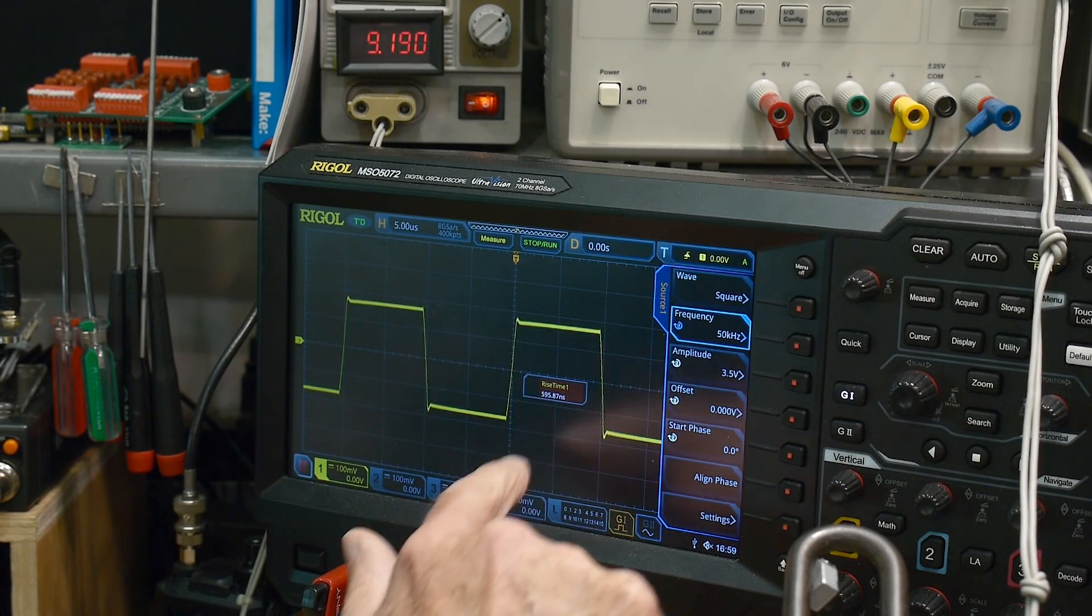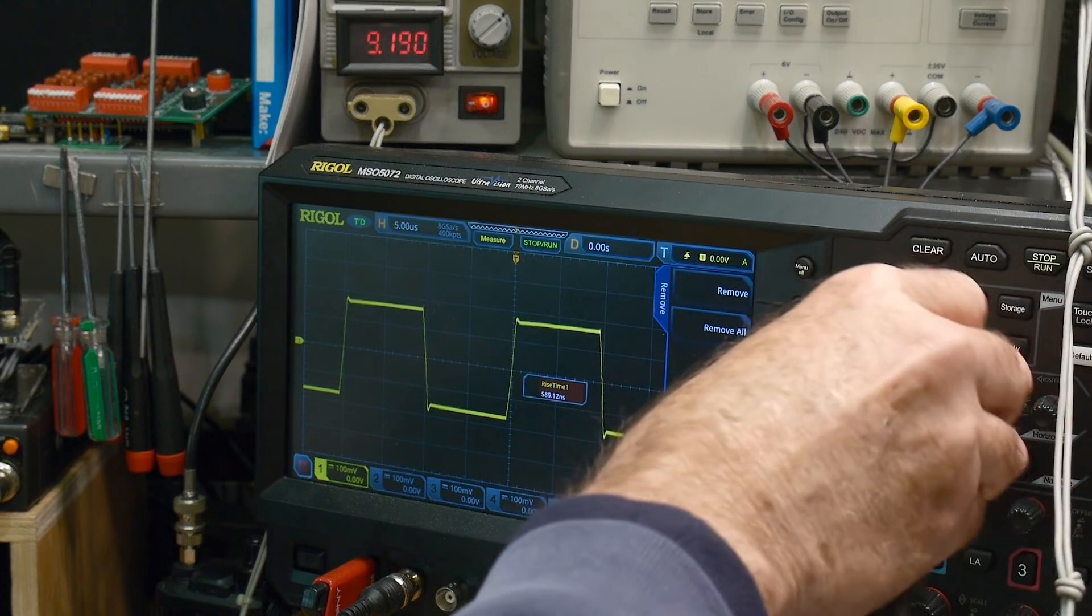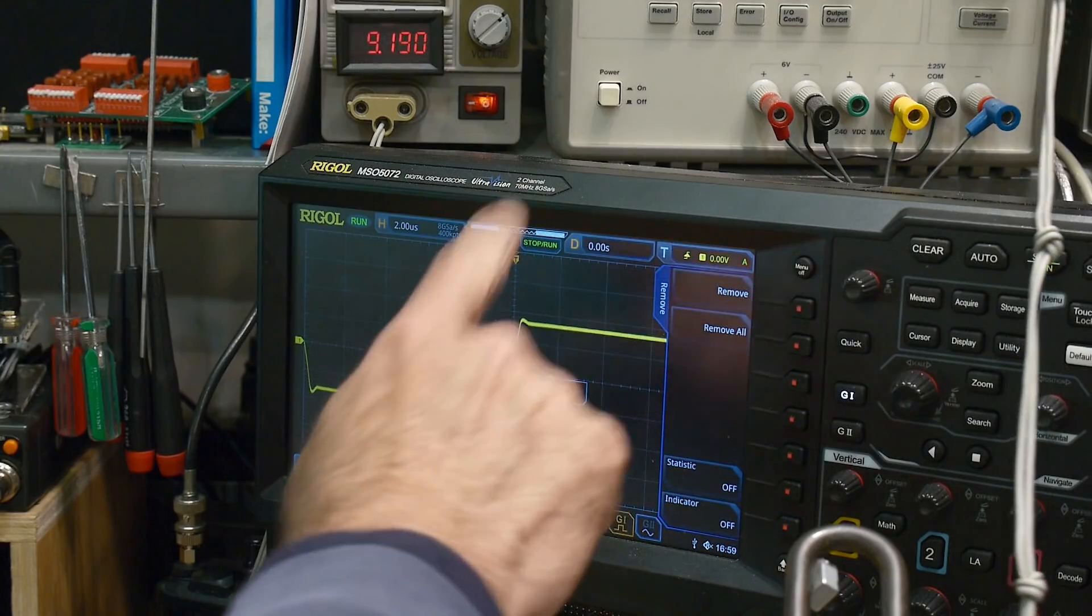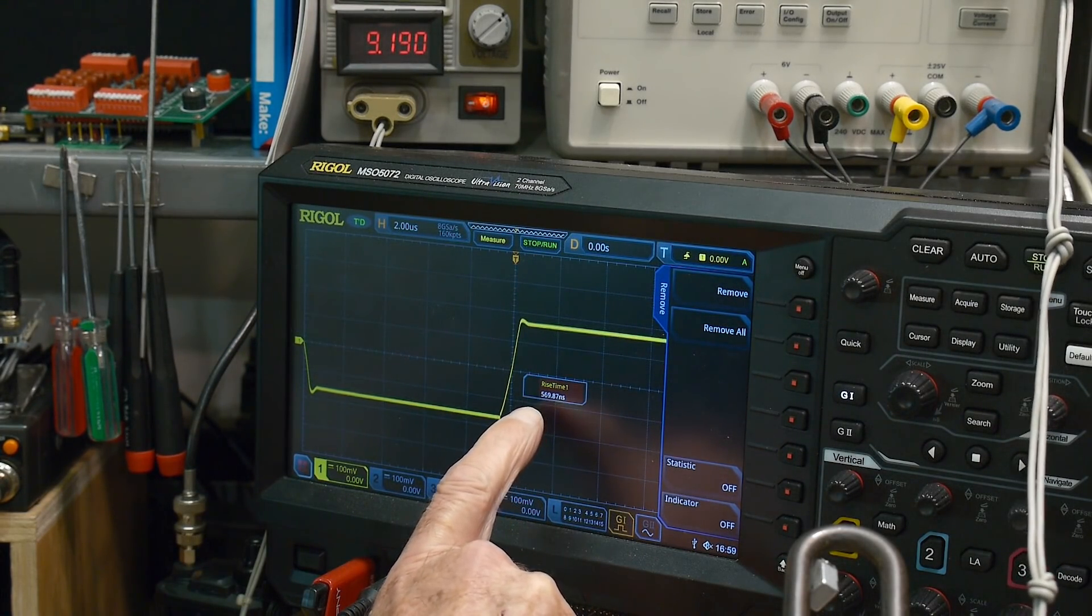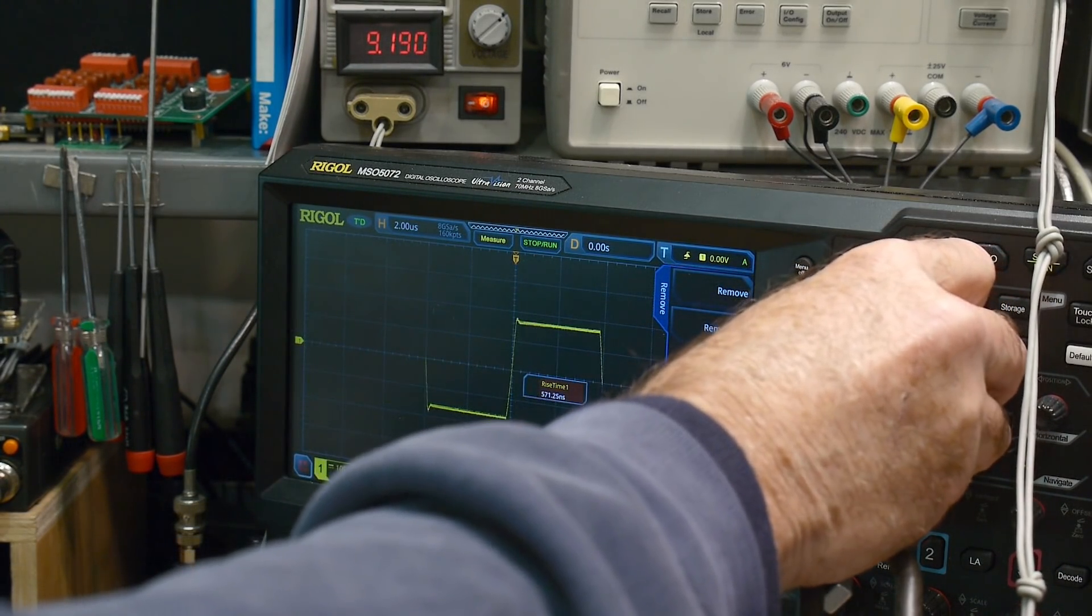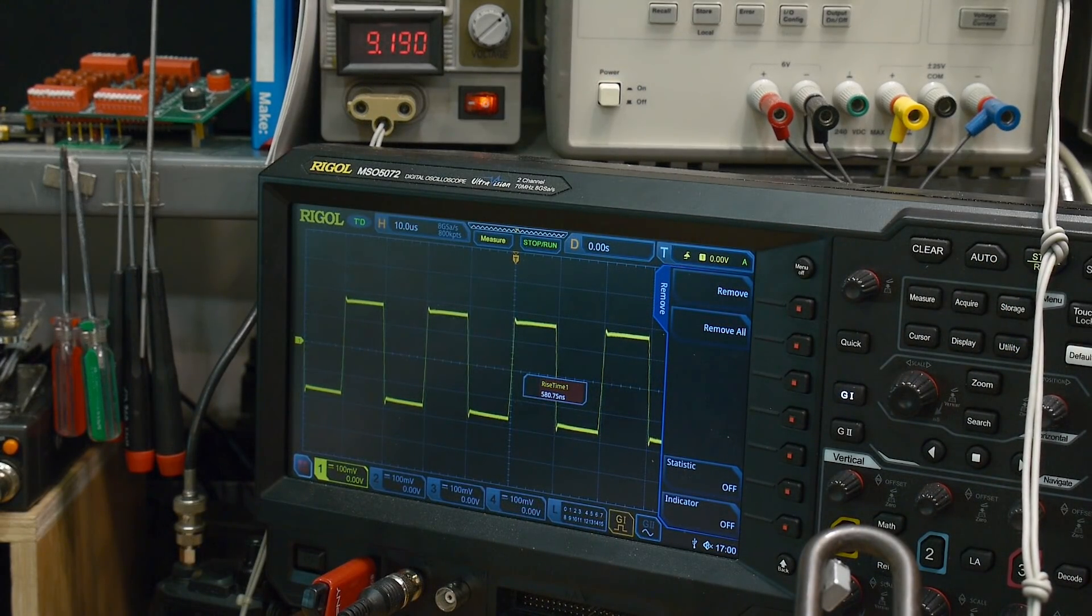We have a rise time measurement here. We have these lovely rise times here. You can see that slew rate limited like op-amps do, but it's 500 and about 575 nanosecond rise times. Looks great. This is at 50 kilohertz.